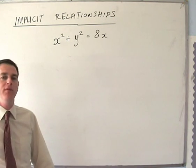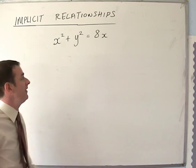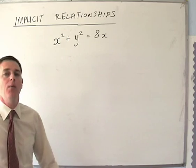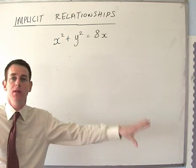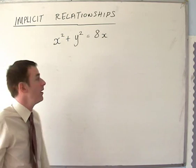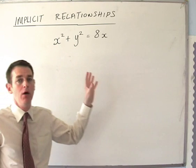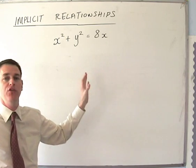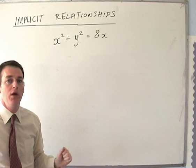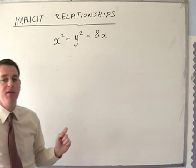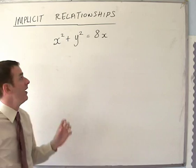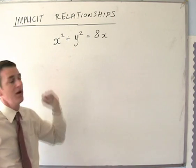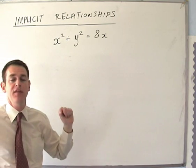Normally when we differentiate something we've got something easy like y equals 3x squared, which we differentiate and end up with dy/dx equals something in x. But what about the case where we can't actually rearrange to get y equals something and then differentiate? We're going to be doing something called finding an implicit relationship. First let's talk about differentiating things to do with y's instead of x's.